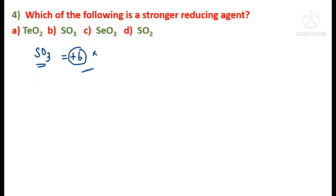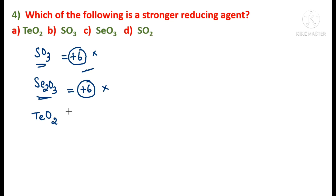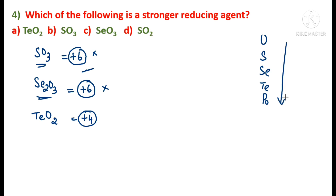Similarly, selenium in SeO₃ is also in the +6 oxidation state — the maximum for Group 16 — so it too cannot act as a strong reducing agent. For TeO₂, tellurium is in the +4 oxidation state. As we move down the group, the stability of the +4 oxidation state decreases due to the inert pair effect — the inert pair of electrons does not participate in bond formation.